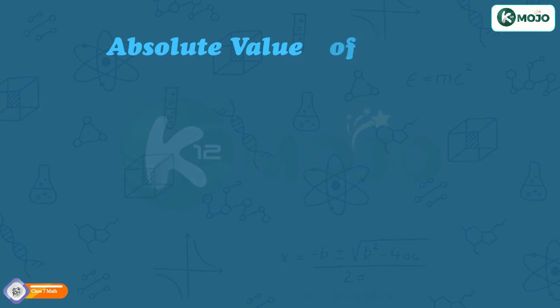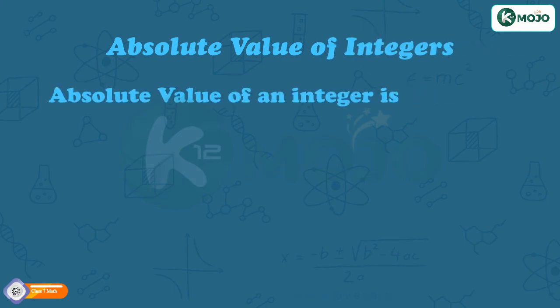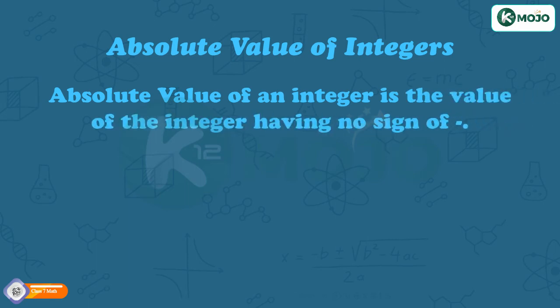Absolute Value of Integers. Absolute value of an integer is the value of the integer having no sign of minus. Absolute value of minus 2 is 2.